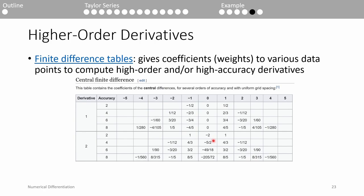Instead of doing the hard math yourself, you can use what's called finite difference tables. Finite difference tables list out the coefficients of each data point you need to compute the derivative you want. This table, which I pulled from Wikipedia, illustrates the coefficients for the central difference. If you want the first derivative with a truncation error on the order of the step size squared, you multiply the point behind the point of interest by negative half and the point in front by positive half, then add them. This particular table lists all the way up to an eighth order estimate, which requires four points behind and four points in front of the point of interest. We won't use these tables in this class, but keep this in the back of your mind for future use.